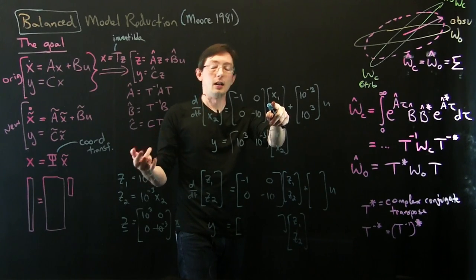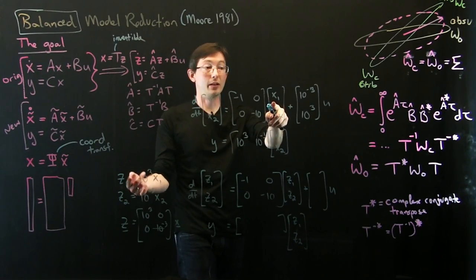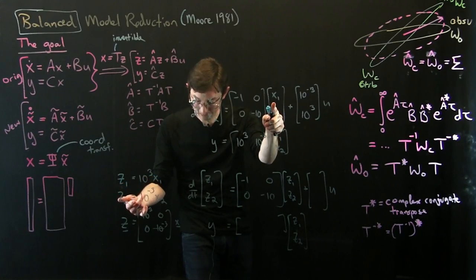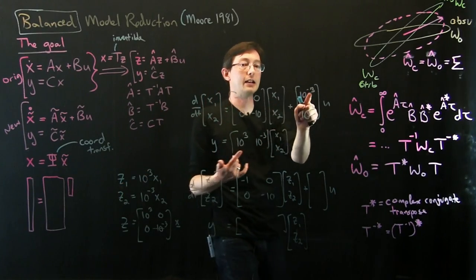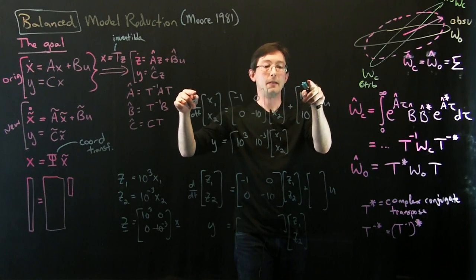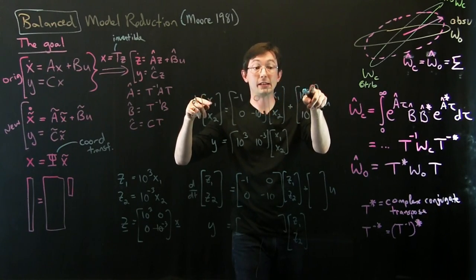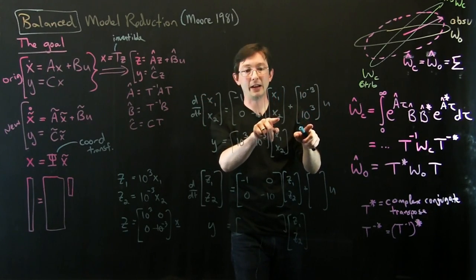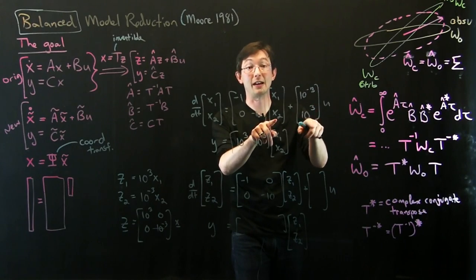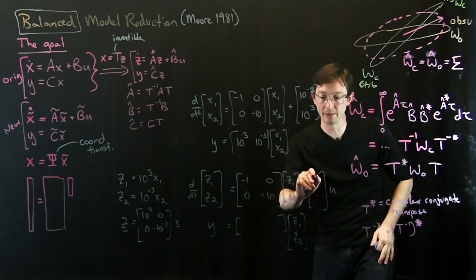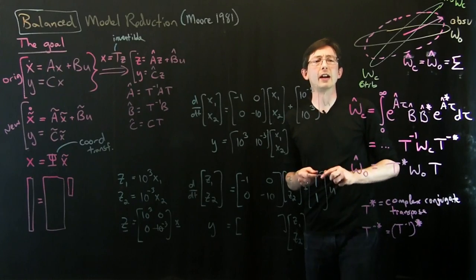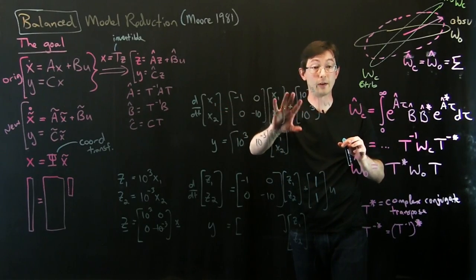So now I'm amplifying x1 by a factor of a thousand. And so essentially what that does, if you go through this T inverse B, is it makes this a thousand times bigger, and I made x2 a thousand times smaller, it makes this a thousand times smaller. So what this does to my B matrix is 1, 1.